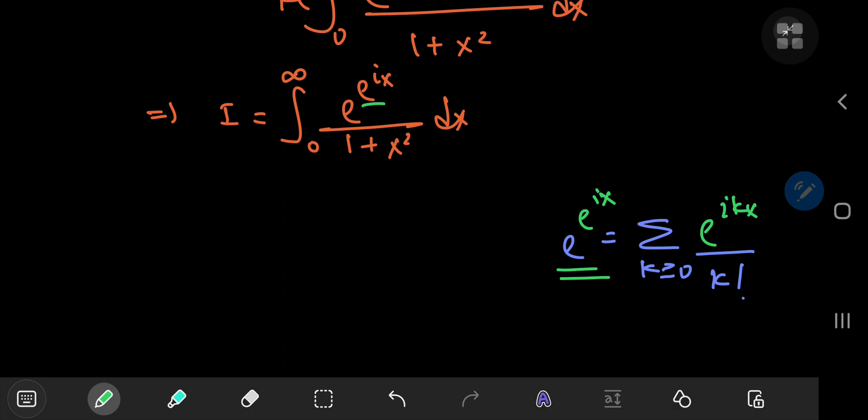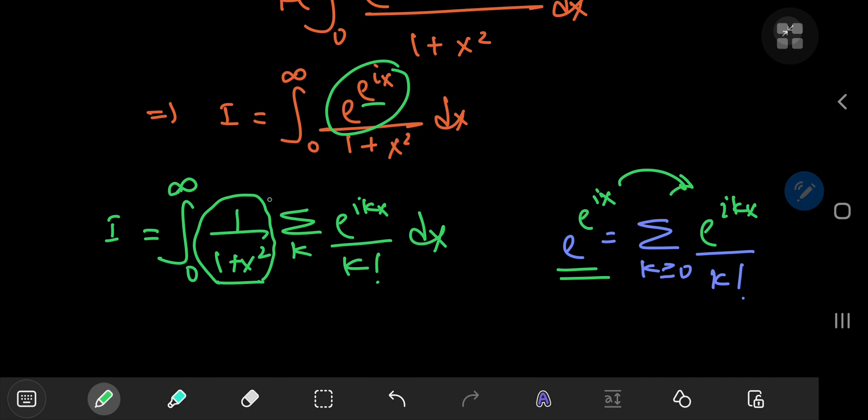So we had an exponential to an exponential, and now we've converted it into an infinite sum over exponentials, which is not that bad, to be honest. Infinite sums are pretty cool at times. So we can write I as the integral from 0 to infinity of 1 by 1 plus x squared times the series expansion, which is the sum over k, of e to the ikx divided by k factorial.